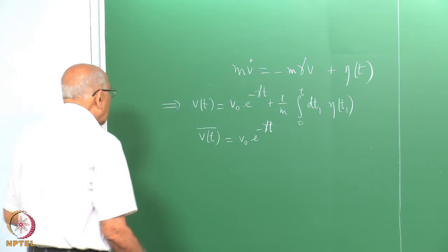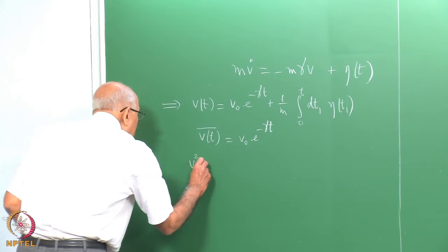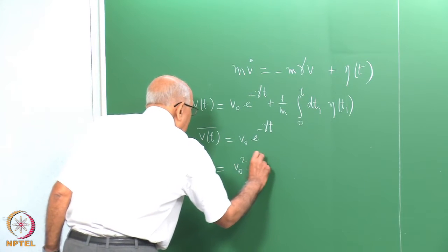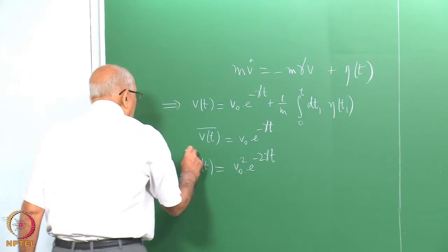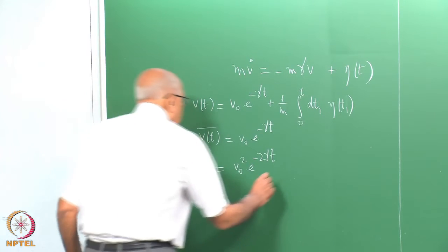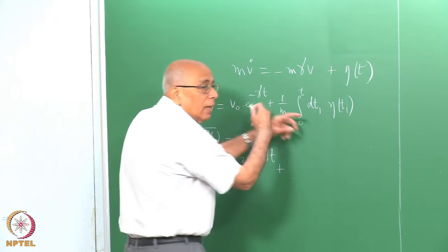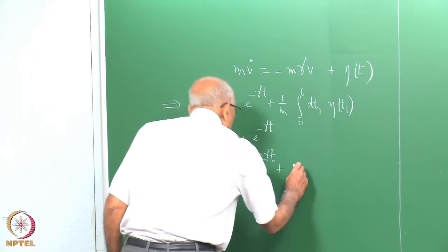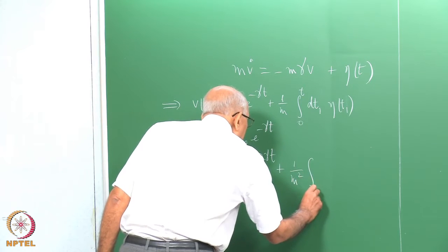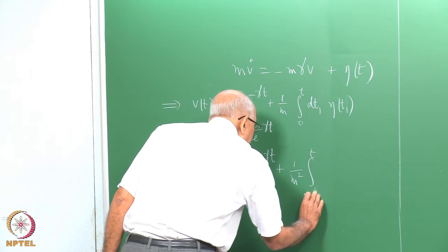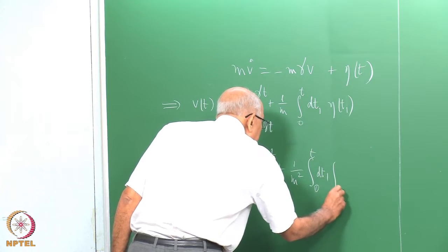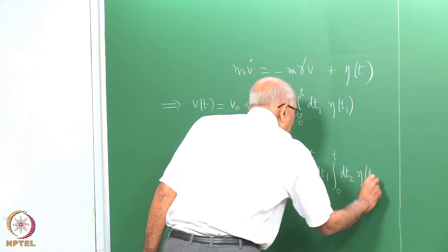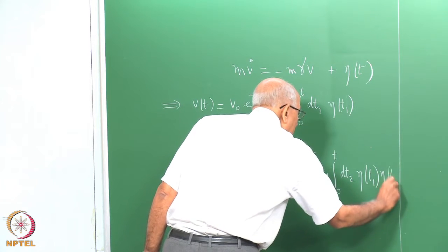The more important test was what happens to the mean square. We computed v-squared of t: that was v-naught squared times e to the minus 2 gamma t, plus the cross term — which vanishes because the average of eta is zero — plus 1 over m squared, an integral from 0 to t of dt1 and 0 to t of dt2, times the average of eta(t1) eta(t2).